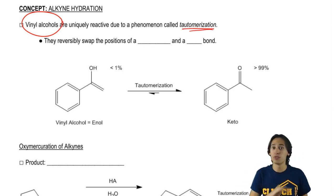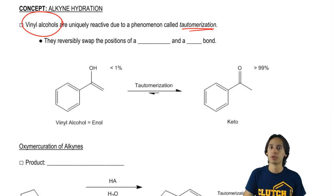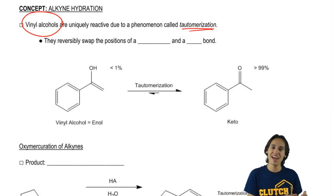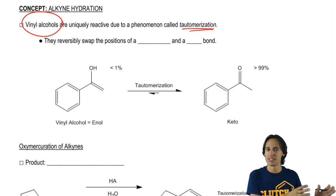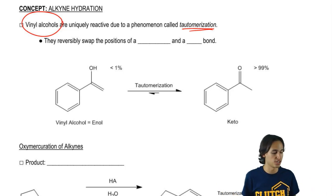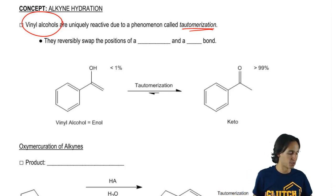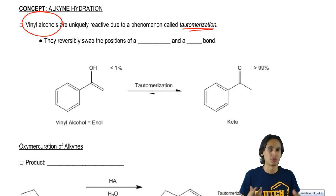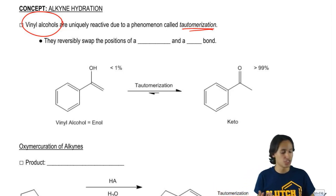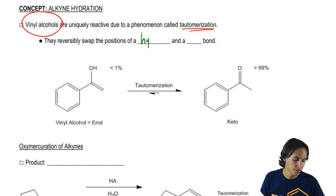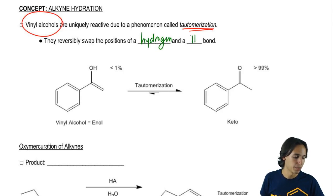Tautomerization is a phenomenon we won't fully understand the mechanism for until Orgo 2, so it's a bit unfortunate that we have to talk about it now. I'm just going to give you a quick overview so you know what tautomerization is. Basically, all you really need to know is that they're going to reversibly swap the position of a hydrogen and a pi bond.